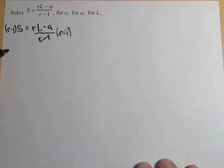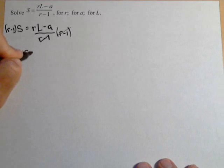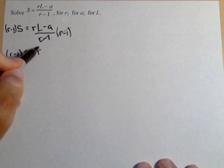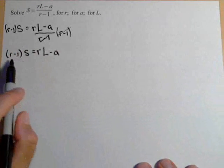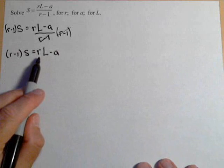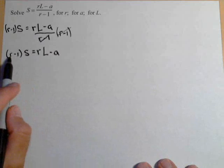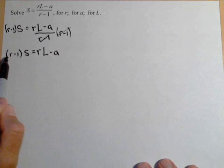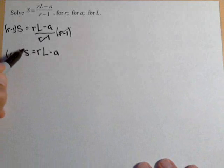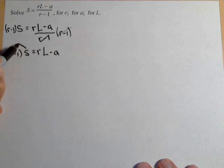Now, looking at what we have left, R minus one times S equals RL minus A. We have two R's in here and we have to solve for R. So we need to get both terms with R on the same side. In order to move things around, we need to get rid of these parentheses, so we're gonna distribute this S.